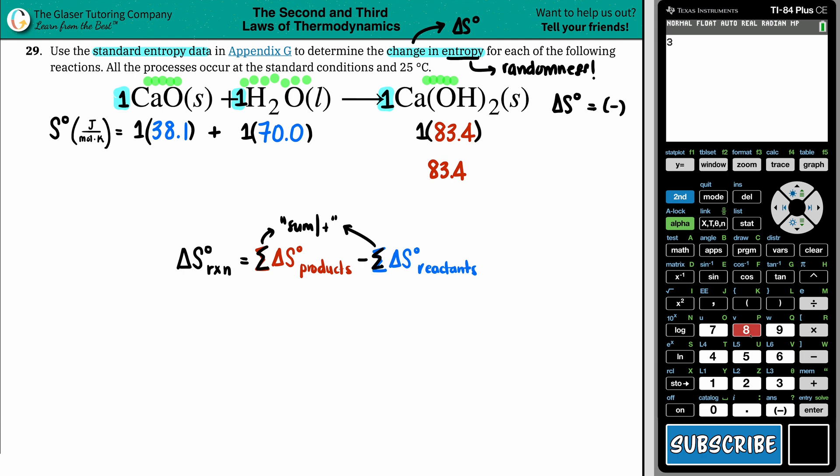So going to calculator, I'm going to say 38.1 plus 70. Looks good to me. We get 108.1. Okay?